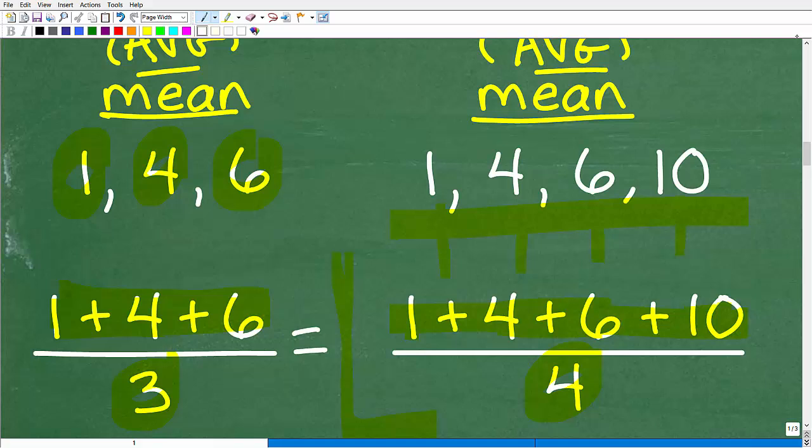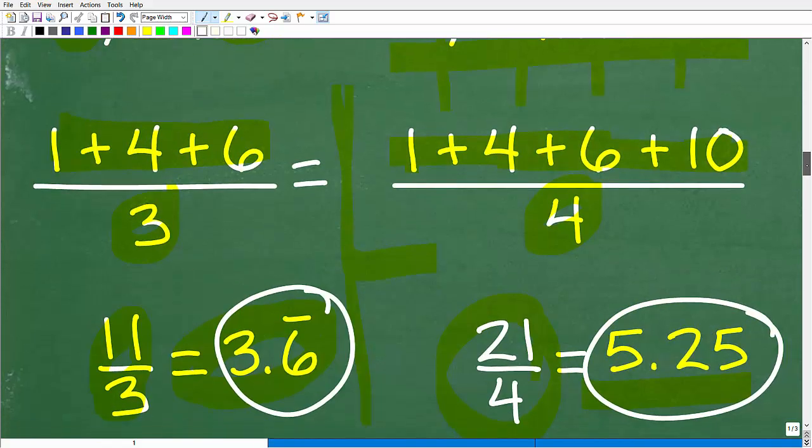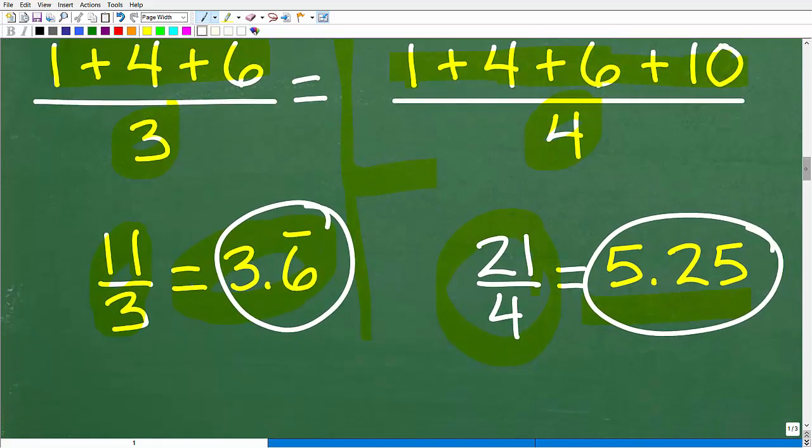But that's not the only measure. And again, the average is the same thing as the mean. And oftentimes the average can be deceiving. So you want to have more ways to measure information or data.